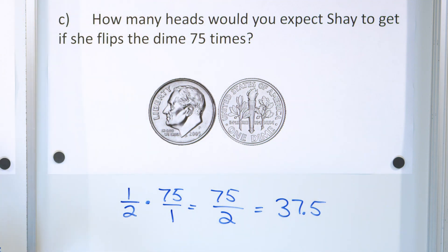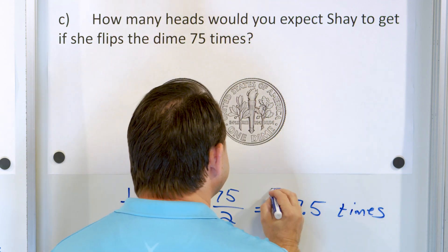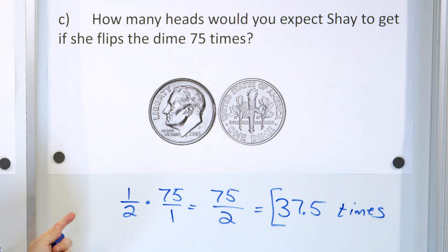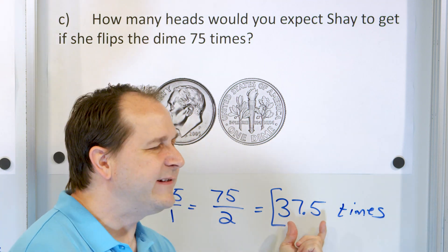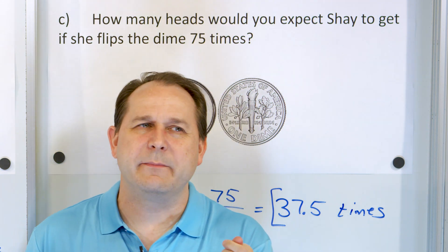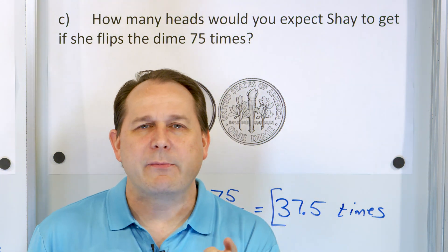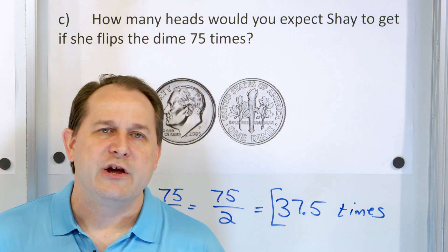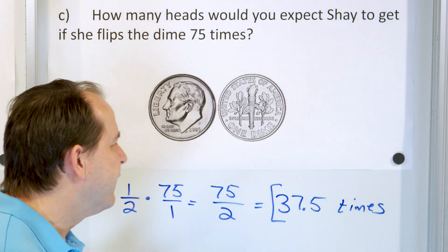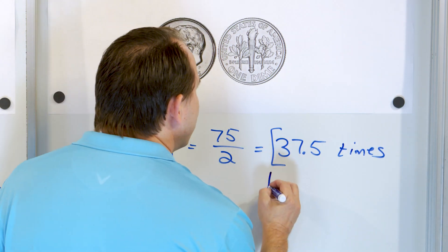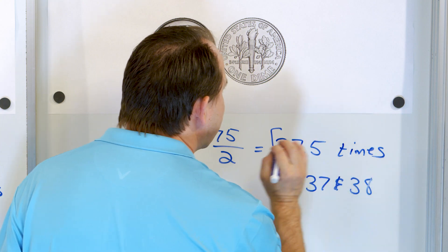So what does 37.5 mean? In probability, it's just an average. You can't get half of a flip. But what it really means when we calculate this is it's somewhere between 37 and 38 times.